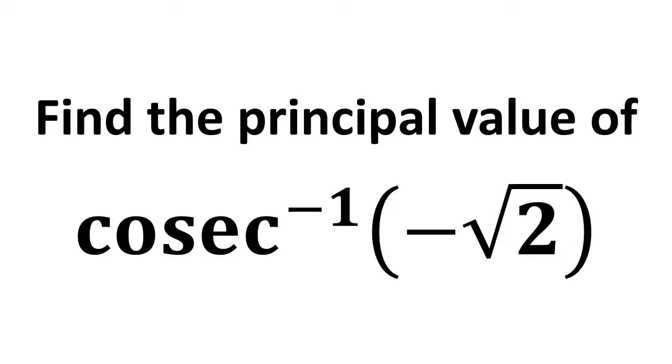In this video, we learn to find the principal value of cosec^(-1)(-√2). Let us assume y equals cosec^(-1)(-√2).